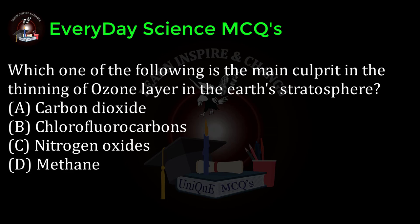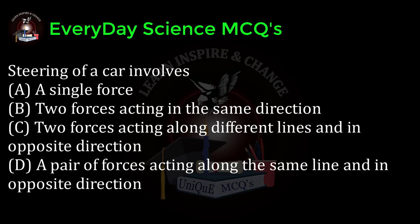Which one of the following is the main culprit in the thinning of the ozone layer in the earth's stratosphere? a) carbon dioxide, b) chlorofluorocarbons, c) nitrogen oxides, d) methane. Correct answer: b.